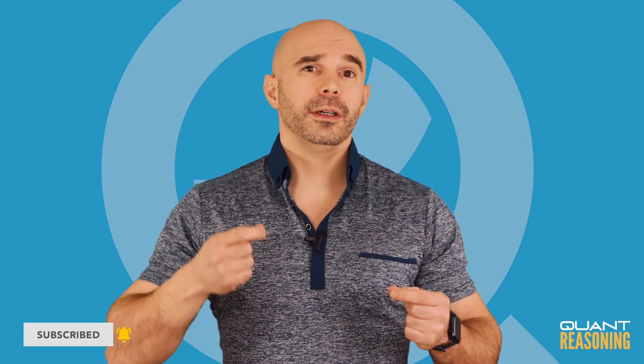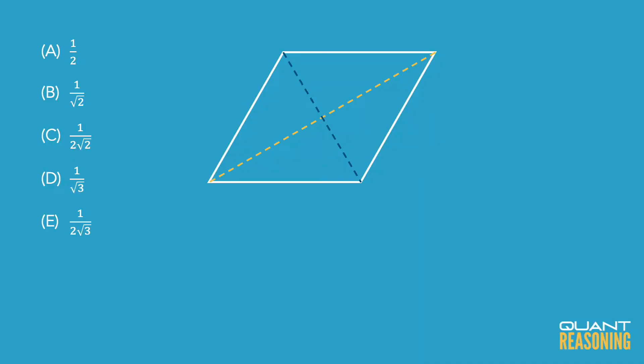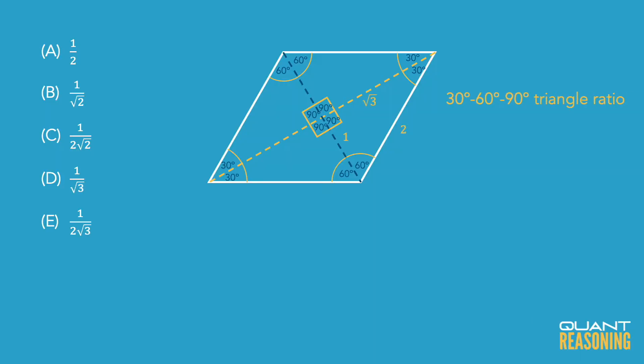Now, how to actually solve this question? When we draw the two diagonals, what we need to realize is that we get four identical triangles that are all 30-60-90. This is because the diagonals are perpendicular to one another and they bisect the angles in the corners — and this is because it's a parallelogram whose four sides are equal. The key property of a 30-60-90 triangle is that the medium-length side is exactly √3 times as long as the short side — something we just have to memorize.